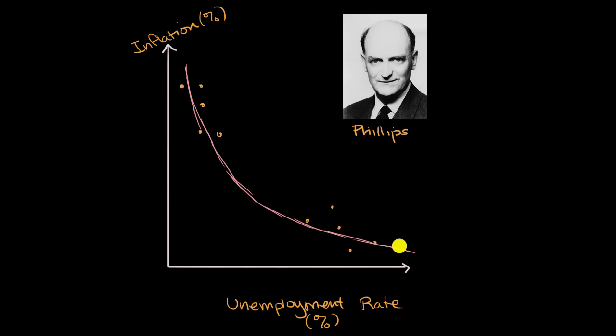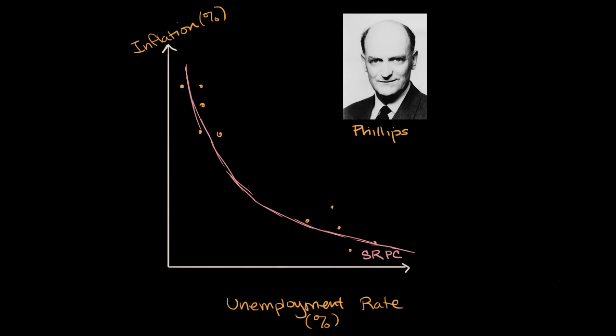Fast forward to the 1970s, and economists started to see this relationship break down. In particular, you saw stagflation — situations of both high unemployment and high inflation — which didn't fit the Phillips curve. So economists theorized that what Phillips observed was really just a short-run phenomenon, and that there is also a long-run Phillips curve describing the natural rate of unemployment.